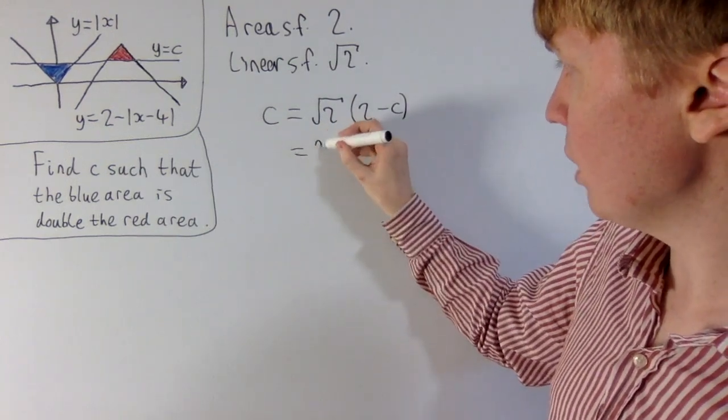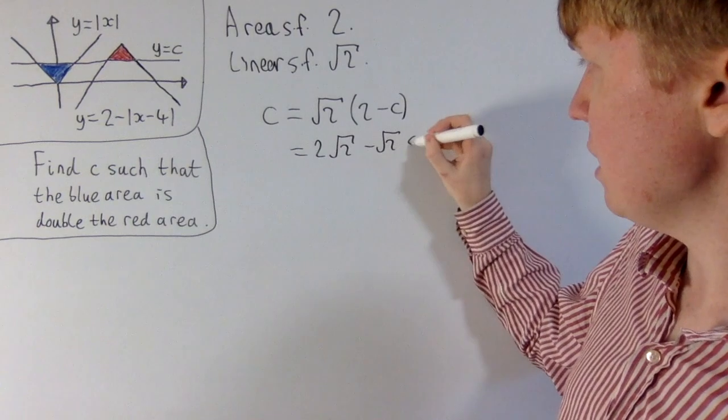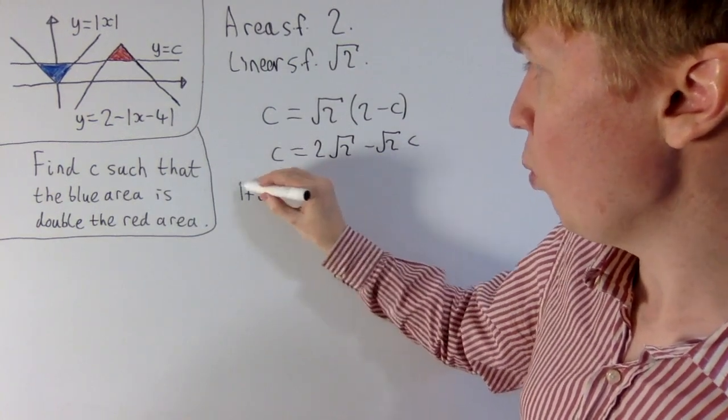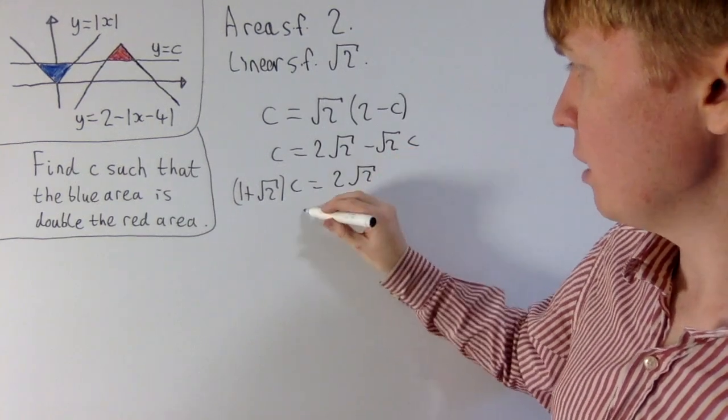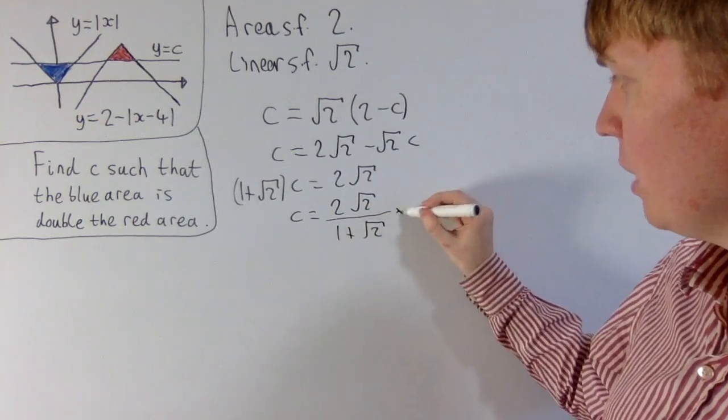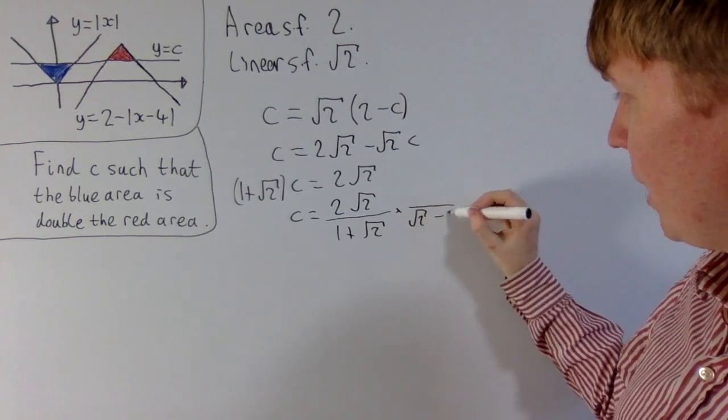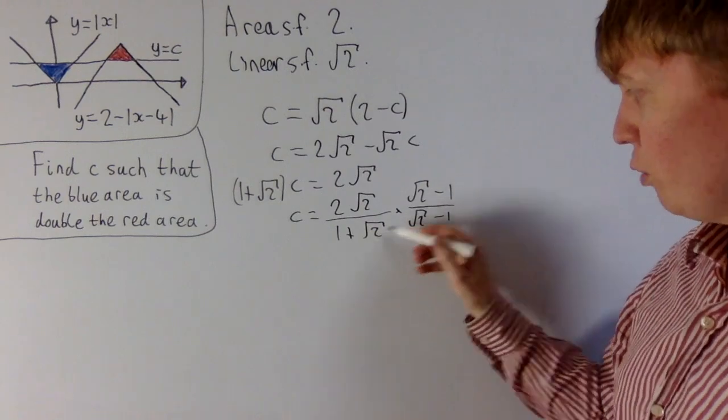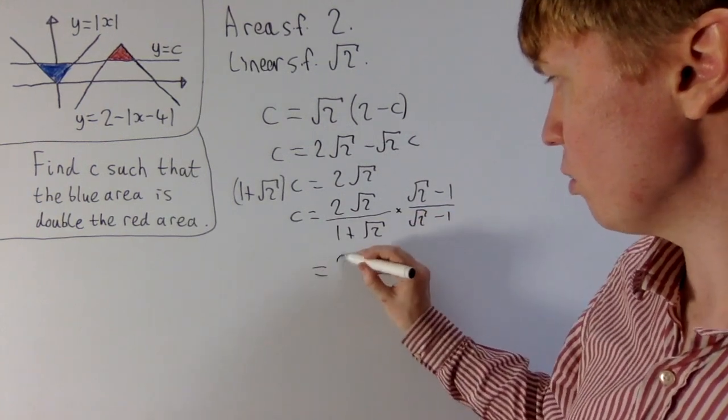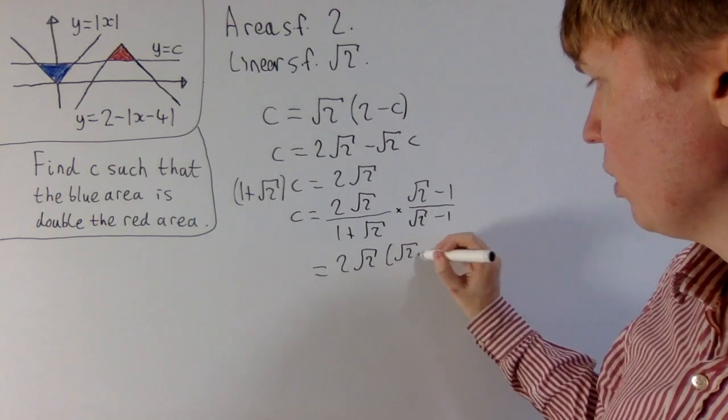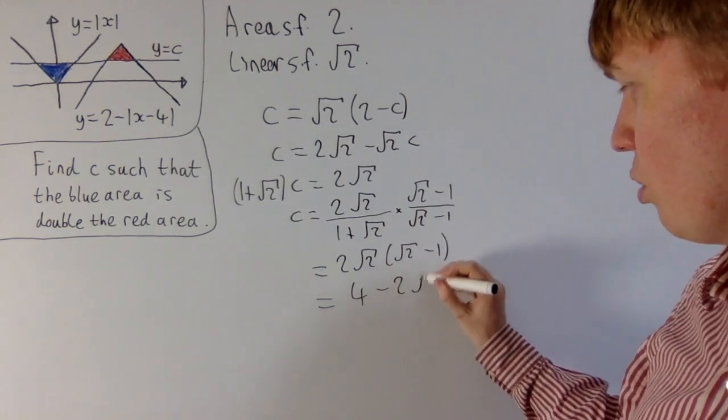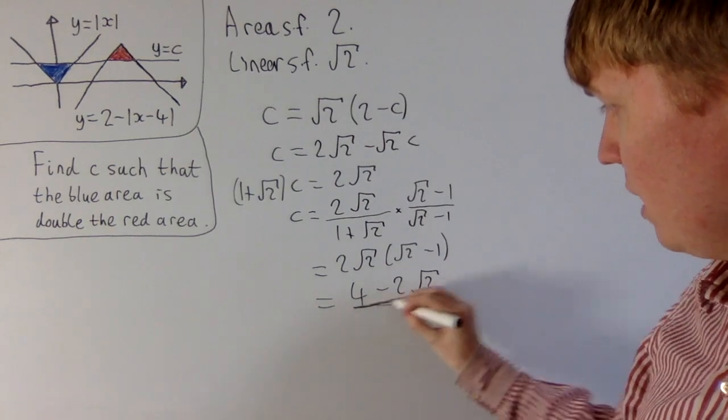So now if we multiply by root 2, we end up with 2 root 2 minus root 2c. You can see we're going to get a nice linear equation to solve. If I take the root 2c onto the left-hand side, we get 1 plus root 2c is equal to 2 root 2. Then divide both sides by 1 plus root 2. We've got 2 root 2 over 1 plus root 2. Let's rationalise the denominator. I'll do this by multiplying by root 2 minus 1, so that we just get, in the denominator now, root 2 squared minus 1 squared just gives us 1. So the denominator completely disappears here. Then our numerator is going to be 2 root 2 multiplied by root 2 minus 1. Then finally, when we expand the brackets here, 2 root 2 times root 2 gives us 4, and then minus a 2 root 2.